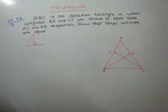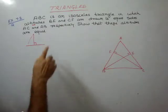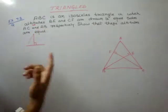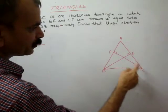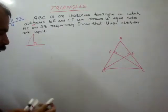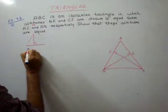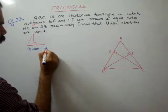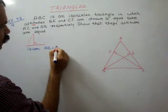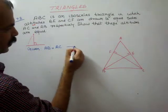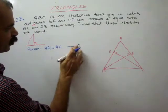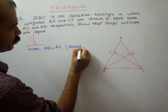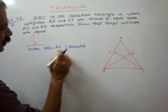Now first, what do we need to do? The question says altitudes are drawn to equal sides AC and AB. That means this is our isosceles triangle. So in our given, we write: AB is equal to AC — this is because it is an isosceles triangle, so both sides are equal.